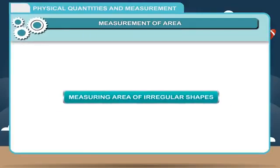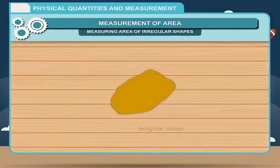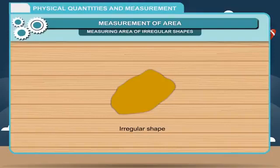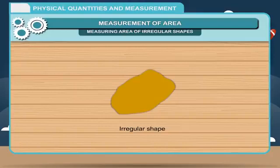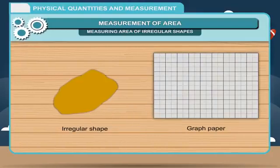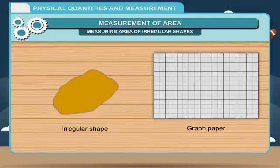Measuring Area of Irregular Shapes. Irregular shapes do not have easily measurable dimensions. Therefore, it is difficult to have a formula for measuring the area of an irregularly shaped region. Areas of irregular shapes can be determined with the help of a graph paper. A graph paper has equal-sized squares of sides 1 centimeter each and smaller squares of sides 1 millimeter each.